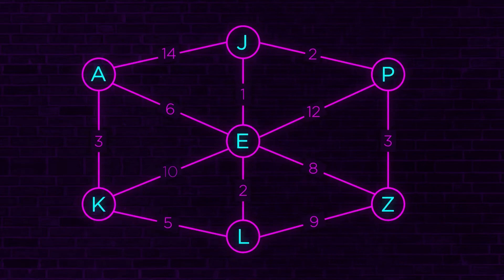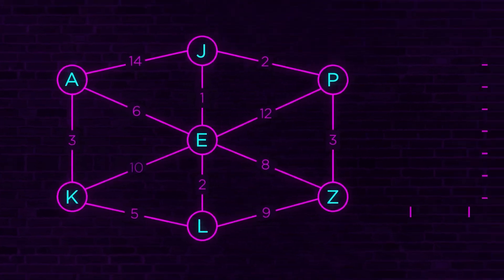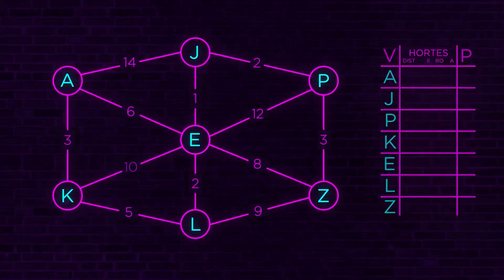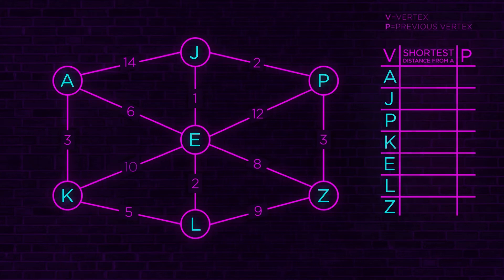Network engineers are interested in this because this is what Fabric Connect is going to use to calculate the shortest path between nodes on our Fabric Connect network. To complete all of this, we're going to have to use a table to track everything, because we need to take Dijkstra's algorithm, put it into this diagram, and run it repeatedly until we've gone to every point and calculated the cheapest cost to the next point.